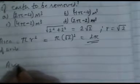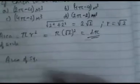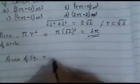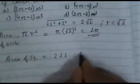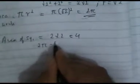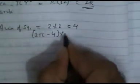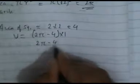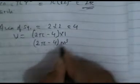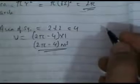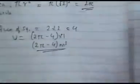Area of square = 2 × 2 = 4. Shaded area = circle area − square area = 2π − 4. Volume of earth to be removed = (2π − 4) × 1 = (2π − 4) cubic meters. So option A is correct.